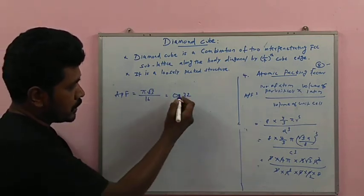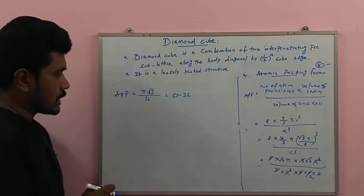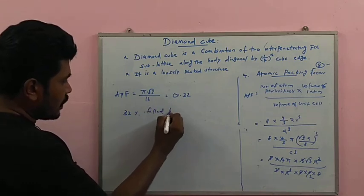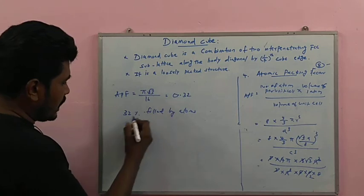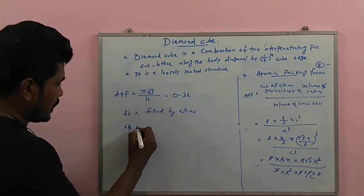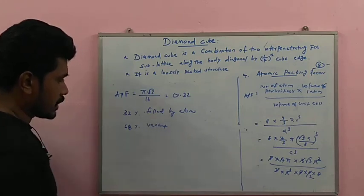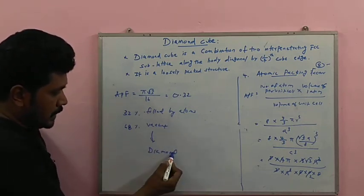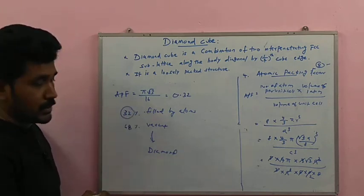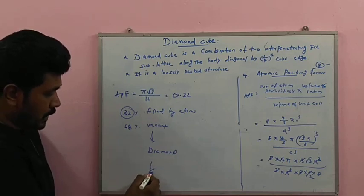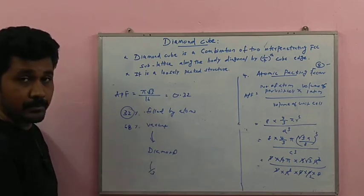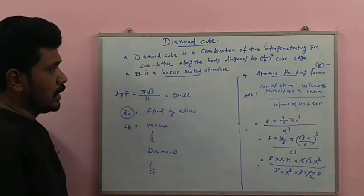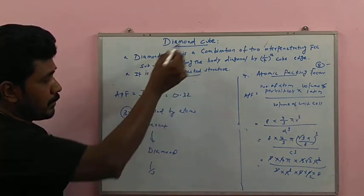The output answer is 0.32, meaning 32% of the unit cell is filled by atoms and 68% is vacant. That is why the diamond structure is termed a loosely packed structure — only about one-third of the space is occupied, making diamond cubic the most loosely packed of all cubic structures.